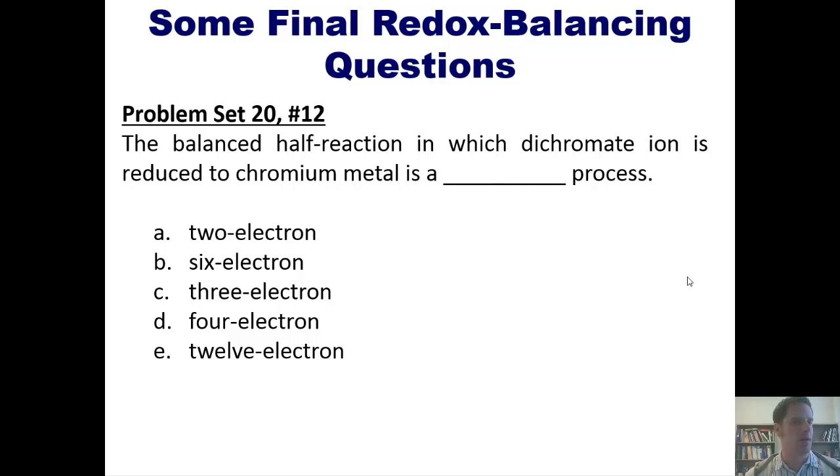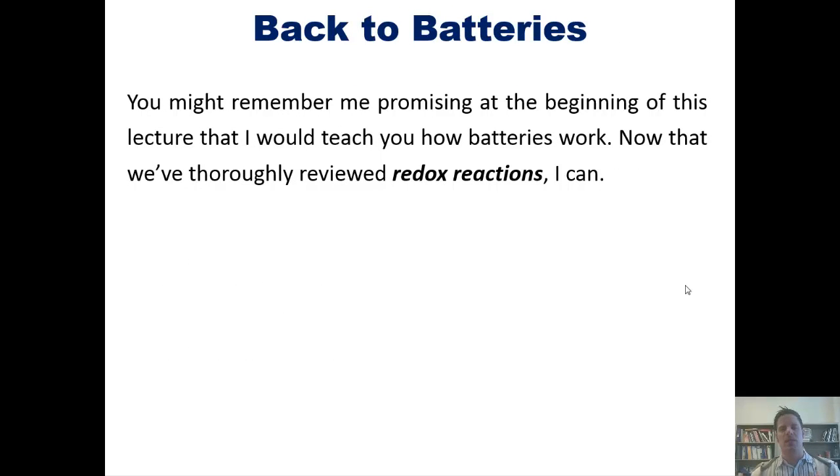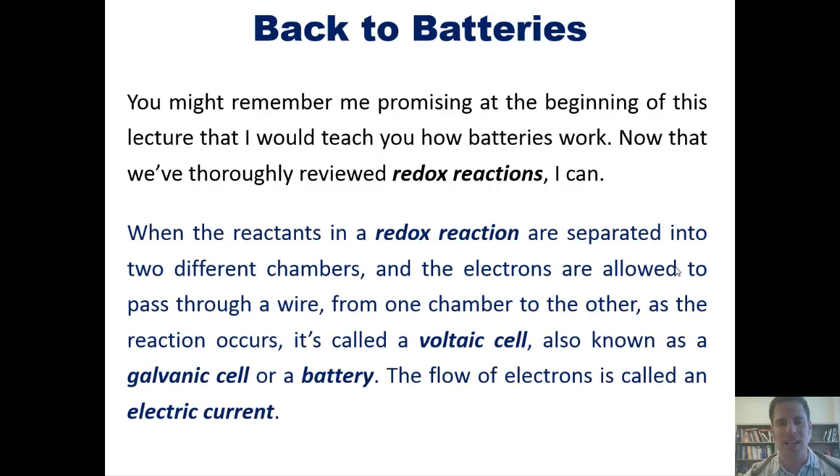Now, you might remember at the beginning of this video, or the previous video, or one of the videos, I promised you that I would teach you guys in this chapter how batteries work. Now that we've thoroughly reviewed redox reactions, I actually can. So when the reactants in a redox reaction are separated into two different chambers, and the electrons are allowed to pass through a wire from one chamber into another. As the reaction occurs, it's called a voltaic cell, also known as a galvanic cell, or a battery. The flow of electrons is called an electric current.